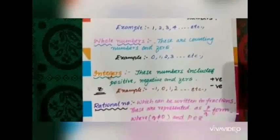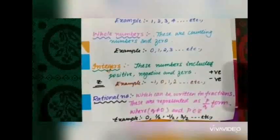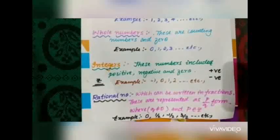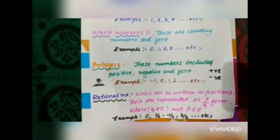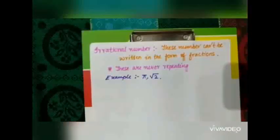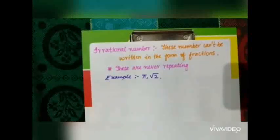Then, rational numbers which can be written in the form of fractions. These are represented as P by Q form where Q does not equal to 0, and P belongs to Z — Z being integers. Examples are 0, 1/2, -1/2, 3/2, etc. Irrational numbers are the numbers which cannot be written in the form of fractions. These are never repeating. Examples are pi and root 2, etc.